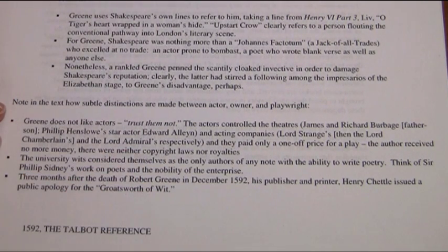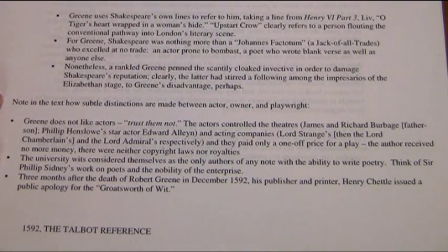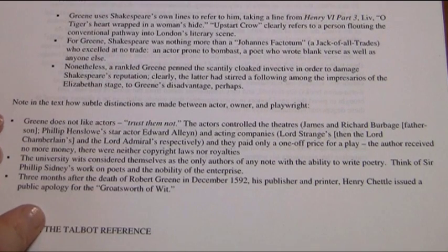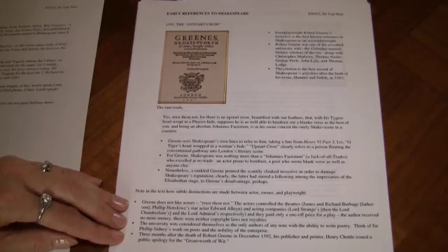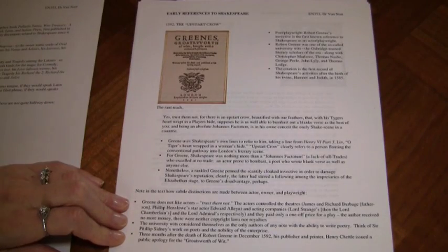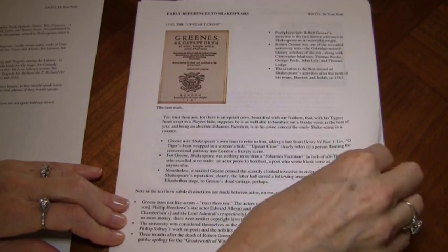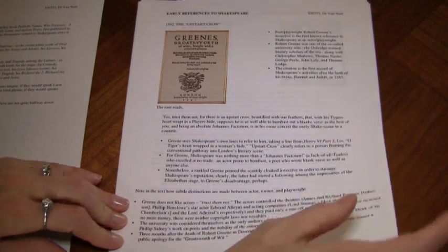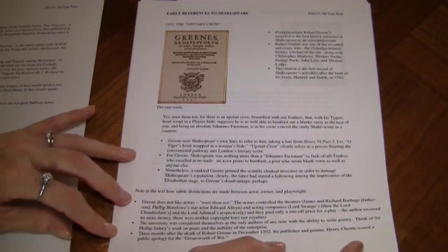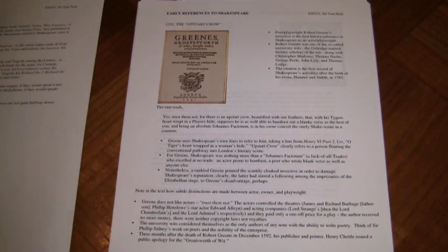The university was considered the only place where one could learn to write poetry. So Greene is suggesting: how could somebody just come in, especially an actor who's only supposed to memorize, and write poetry of this level? It must not have been favorably received, because his publisher had to issue a public apology for this Groat's Worth of Wit written by Greene. It's an interesting invective which shows us how much the status quo was disturbed by Shakespeare's work.